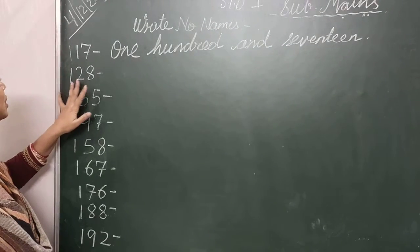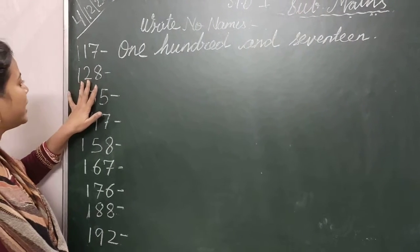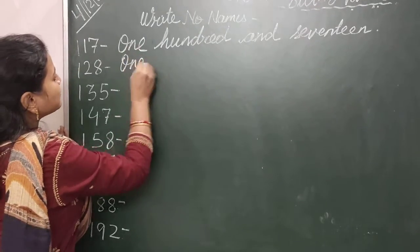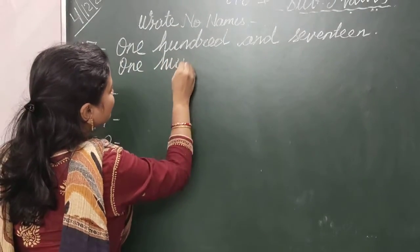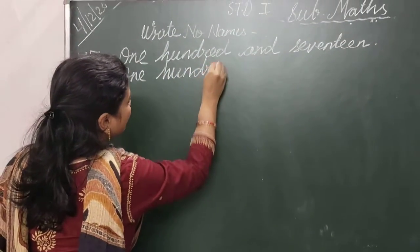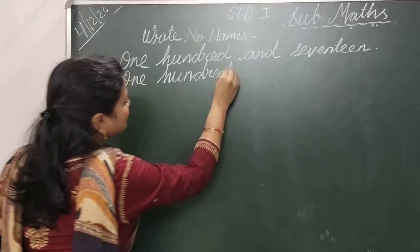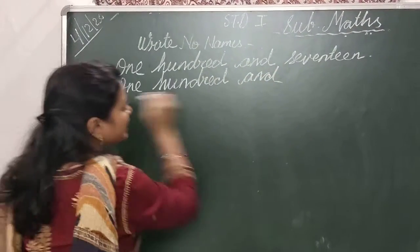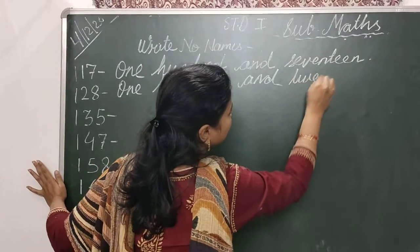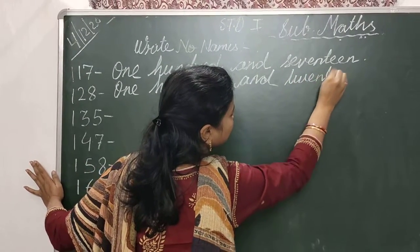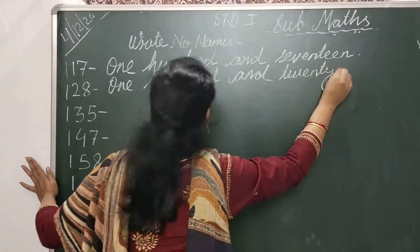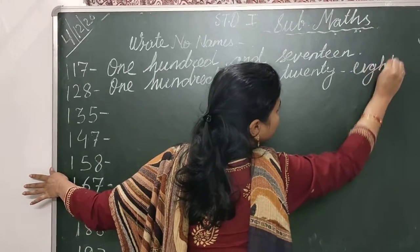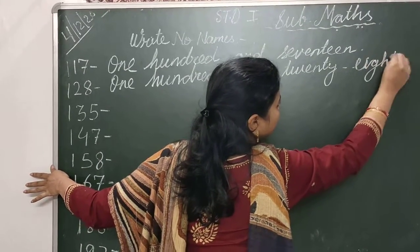The next number is 128. Okay? O-N-E, one hundred, H-U-N-D-R-E-D, and twenty-eight. T-W-E-N-T-Y, twenty, E-I-G-H-T, eight. One hundred and twenty-eight. Right?